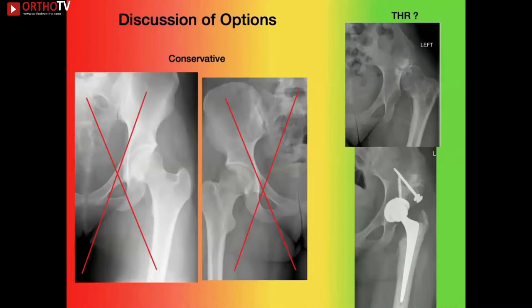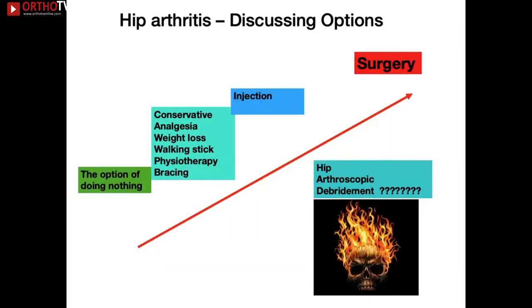Treatment options for hip arthritis should be discussed as a ladder, starting from the simplest: the option of doing nothing, then conservative treatment including weight loss, hip joint injection, and potentially hip arthroscopy depending on your philosophy. Finally, surgery. Whatever your justifiable philosophy, that forms your treatment ladder. When discussing prosthetic options — fully cemented, hybrid, or uncemented, and which bearing — each decision must be backed by sound evidence.